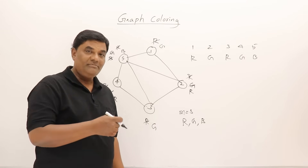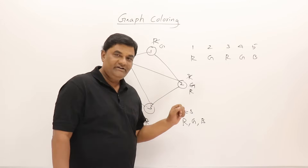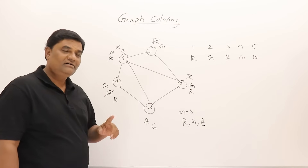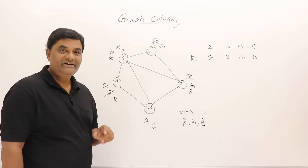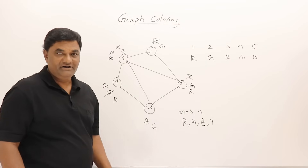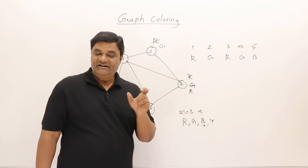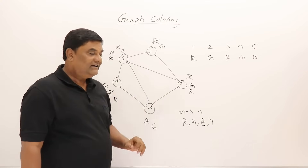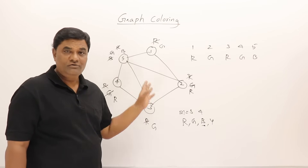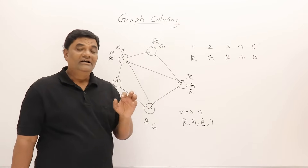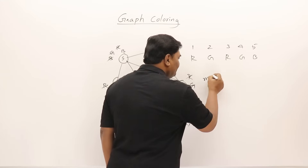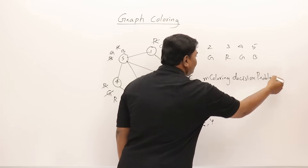We learn two things: with only two colors the graph cannot be colored, but with four colors it can. This leads to a specific problem type: given a graph and some colors, if we just want to know whether the graph can be colored using those colors — without needing the actual vertex colors — that is called the m-coloring decision problem.